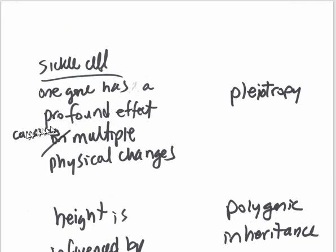One gene has a profound effect causing multiple physical manifestations. That's called this. Sickle cell is a good example of that.